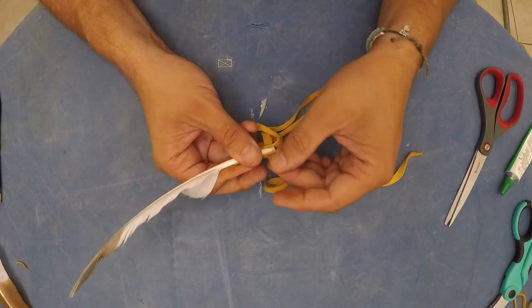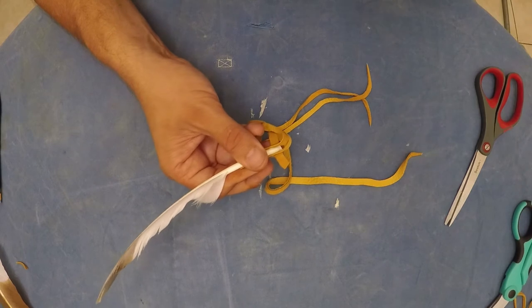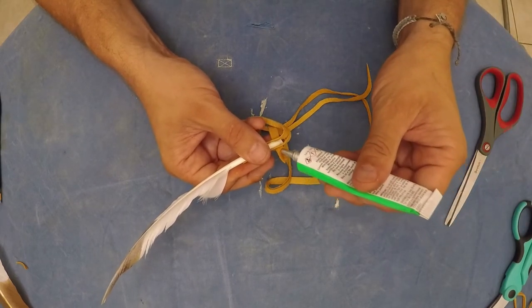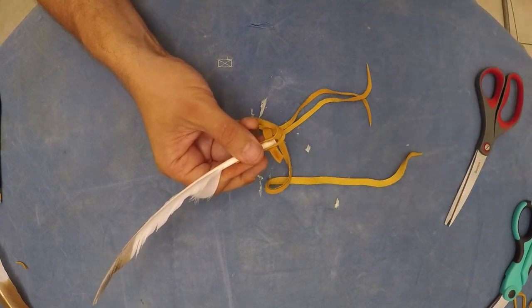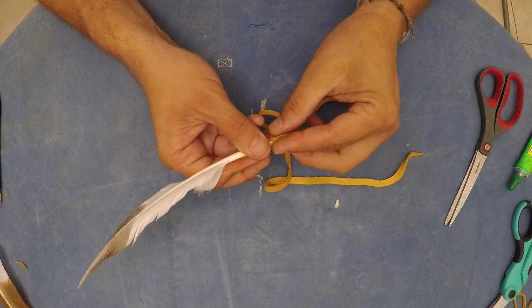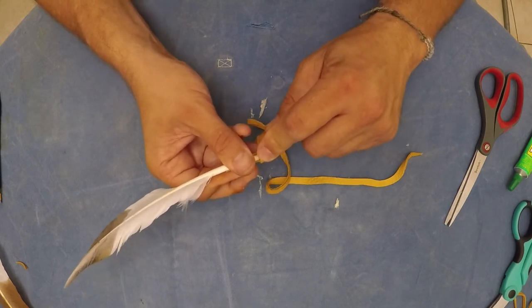Leave about a quarter of an inch of the leather above where you are pressing so that you can run a small bit of glue along that end of the leather to glue down to the quill. Now hold down that end of the leather against the quill for a minute and a half to two minutes while the glue dries.